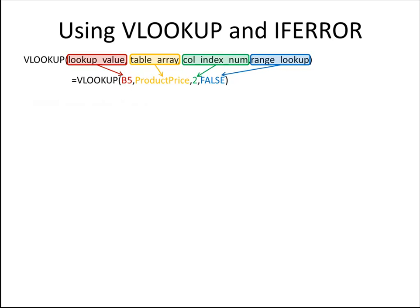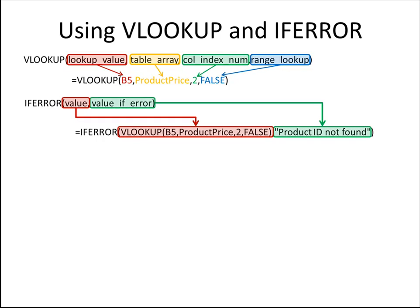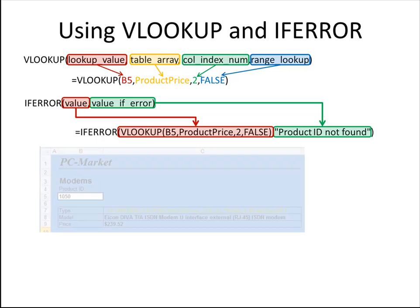which means we want to find an exact match. If we don't find that exact match, then the function IFERROR allows us to display an error message. IFERROR has two parts: the value, which in our case is the VLOOKUP function, and the value if there's an error, which is a text string that says 'product ID not found.' So let's see what this looks like.